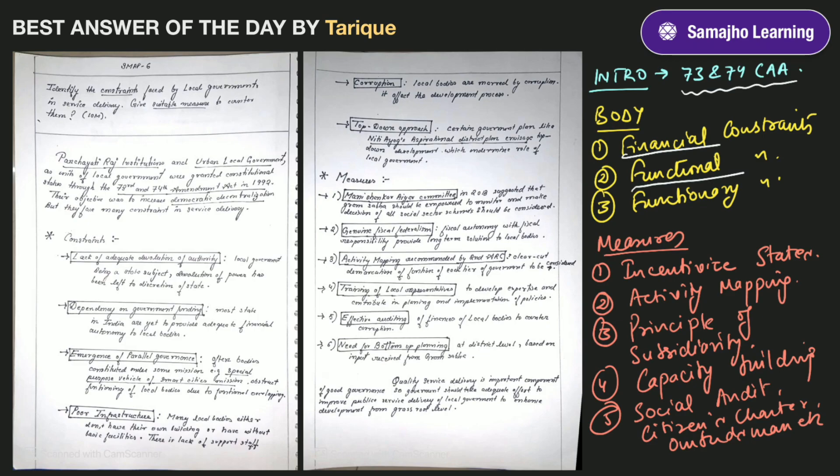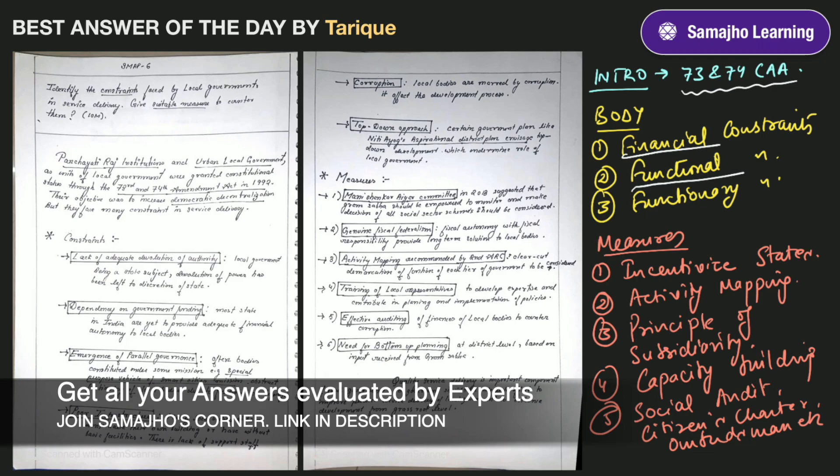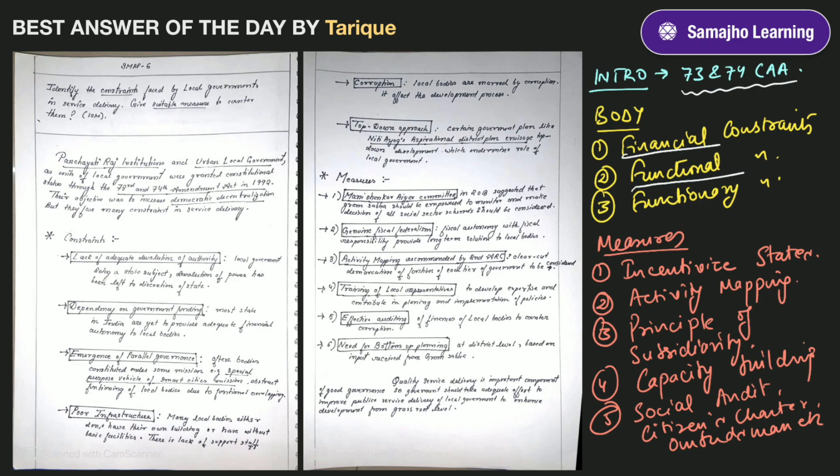In functional constraints, the 73rd and 74th Constitutional amendment acts did not mandate the transfer of governance functions. Education, health, sanitation, water is not provided properly in the local government's hands. This has been left to the state legislature discretion.